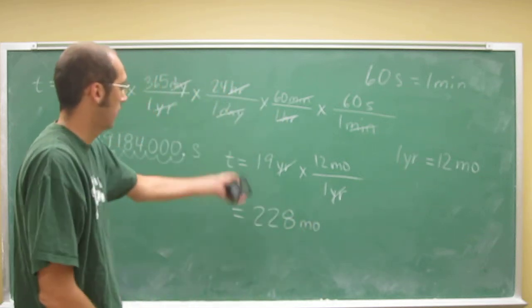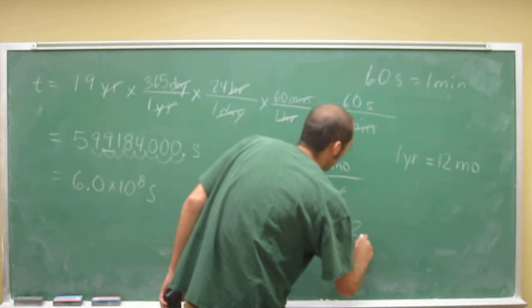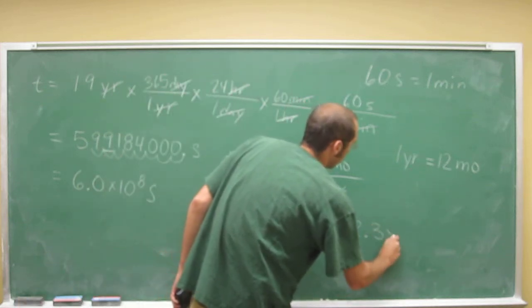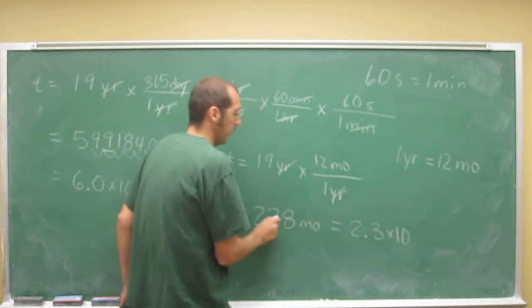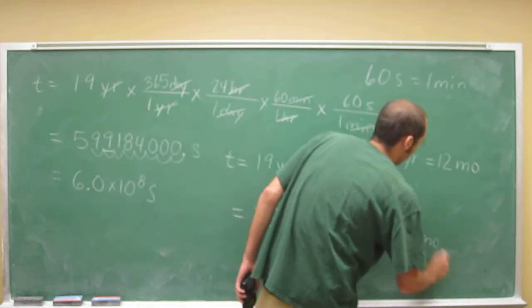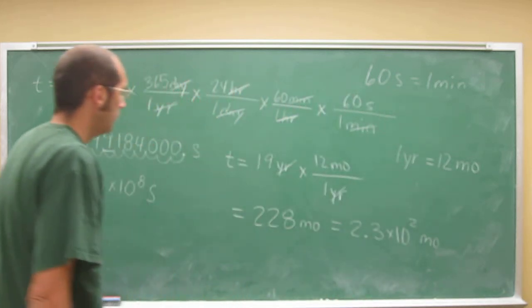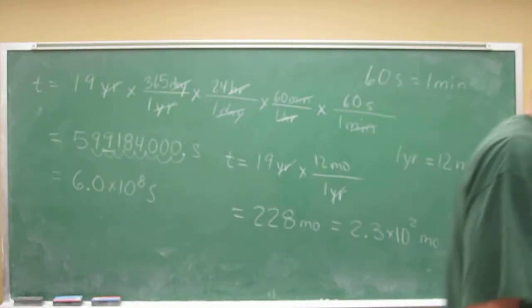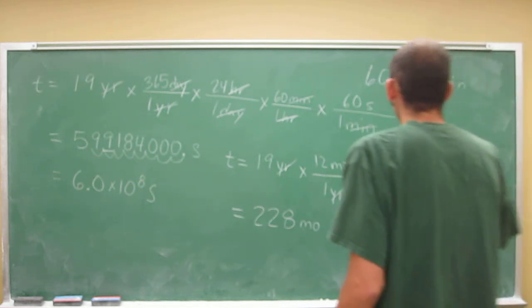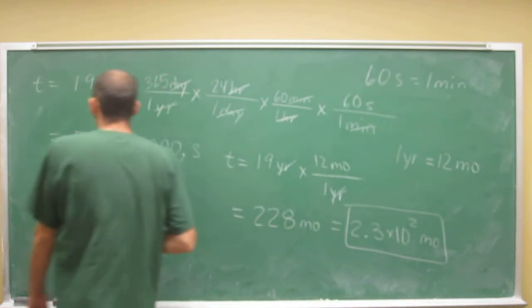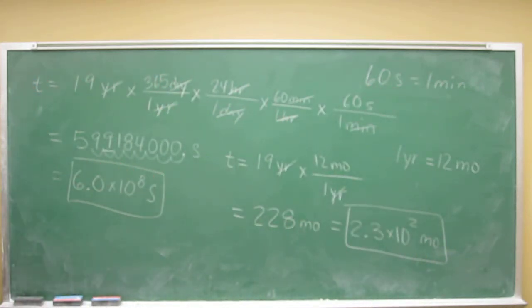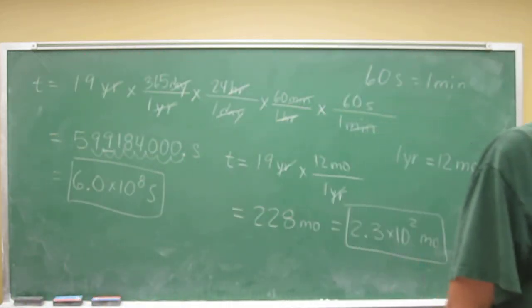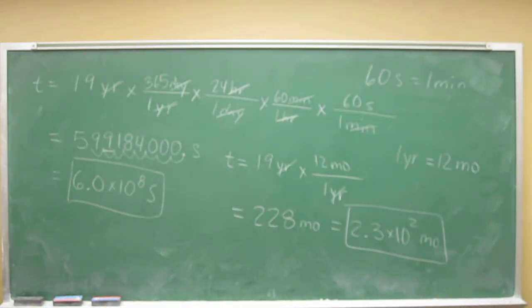And since we're doing it to two sig figs, 2.3 times 10 to the 1, 2. So approximately 230 months. So here, let's box our answers. Just to emphasize that that's a good way to show me that that's actually the answer that you wanted to present to me. Okay? Cool.